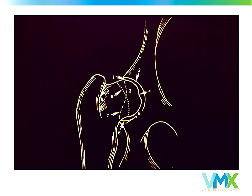We look at approximately nine different points on each hip. The most important is number one: the surface of the femoral head relative to the front surface of the acetabulum socket. The farther these two surfaces are parallel generally determines the difference between the grades of normal — excellent, good, and fair. The more parallel and the deeper the femoral head sits into the acetabulum, as a rule, the better the hip.